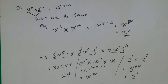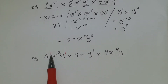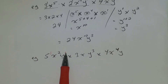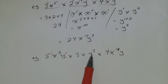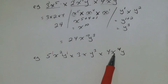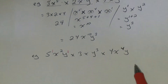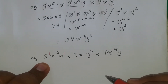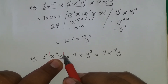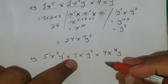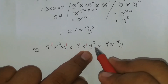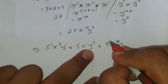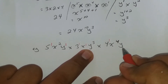Let's look at another example: 5x squared y times 3xy cubed times 4x to the fourth y. I'm placing a 1 for the 5 since it has no power, a 1 for the y since it has no power, a 1 for the 3, a 1 for the x since it has no power, the y has power 3, the 4 has power 1, x has power 4, and the last y has power 1.